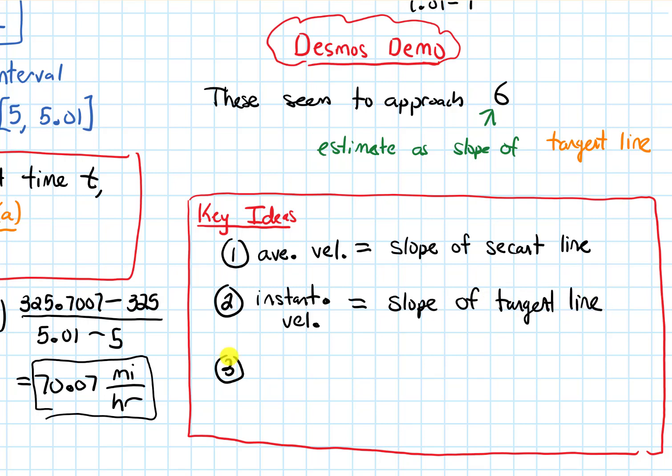And the third key idea is to get the true slope of the tangent line, we will do this by making our interval infinitely small. And to do that, we'll need to introduce the concept of a limit, which is the heart of this chapter.